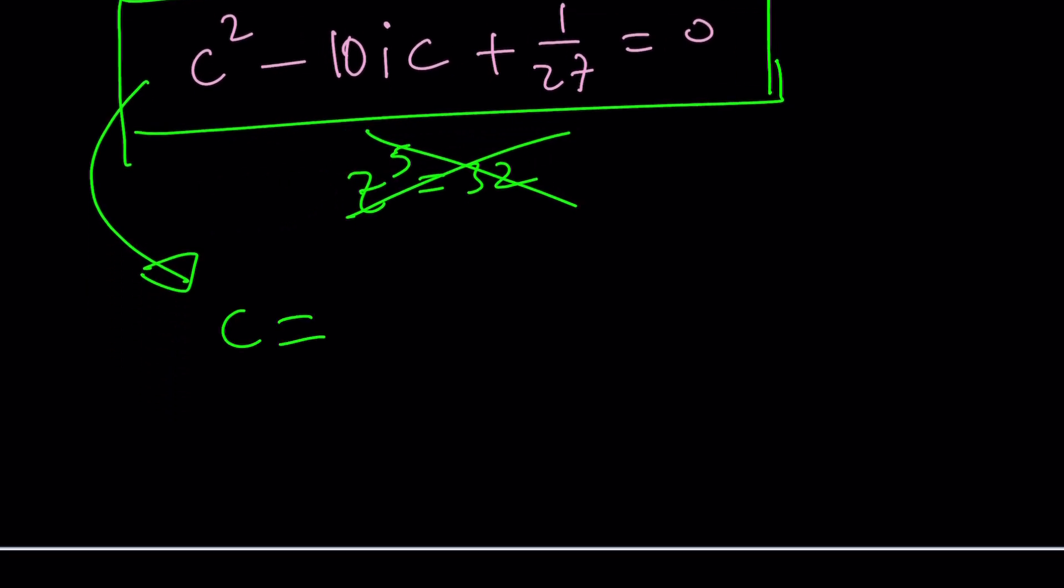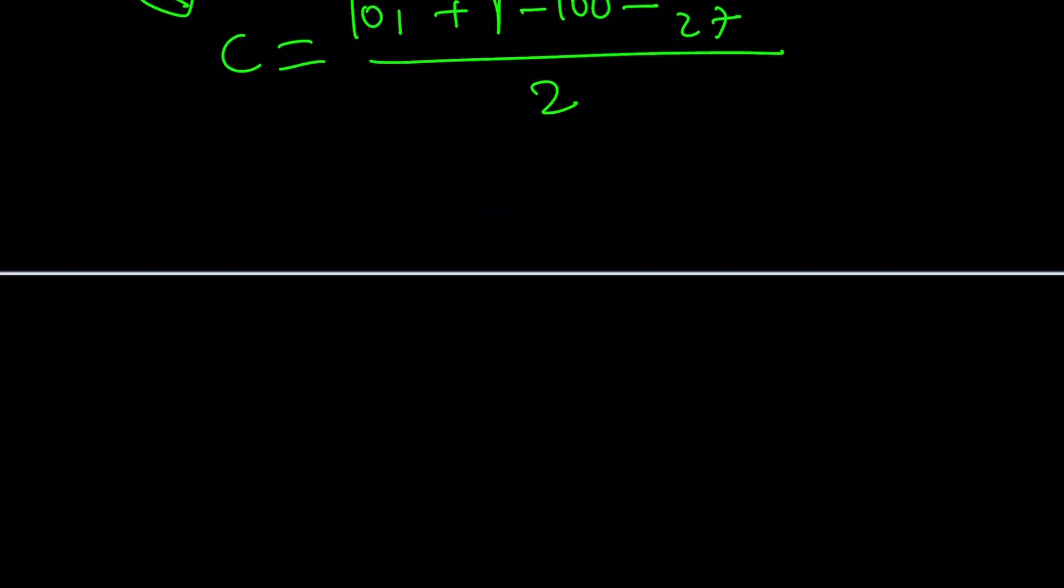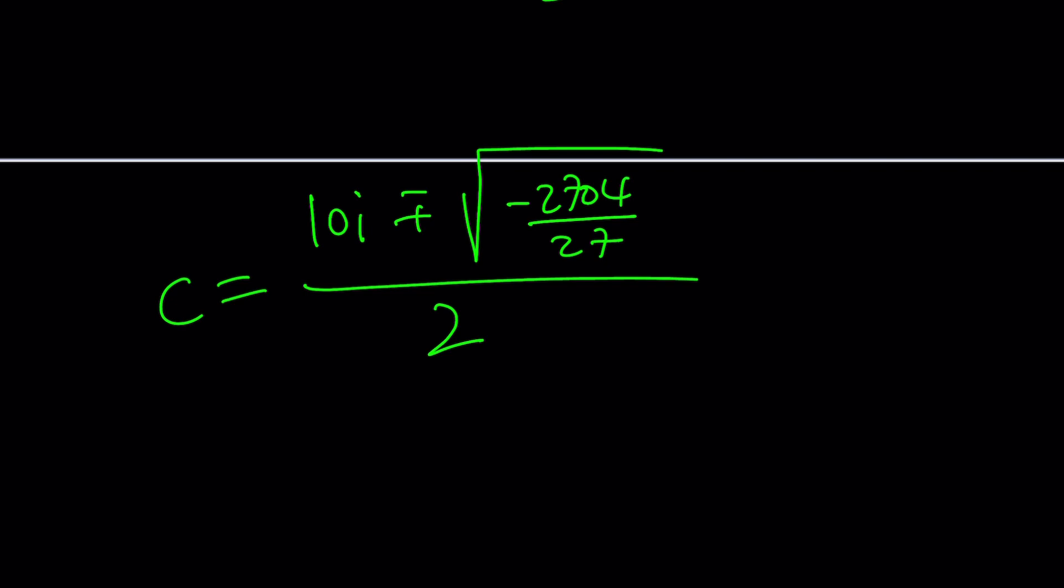That's going to give us -b ± √(b² - 4ac), which is (10i)² is -100 minus 4 times that negative number, divided by 2. Now, let's see. That's going to give us -2704/27. I don't think it's going to give us a nice answer, but at least we know that that's going to equal a complex or imaginary number because we have a negative number inside the radical. There's going to be some multiple of i, right? Like ki. Maybe this can be simplified. I don't know. I haven't tried 2704.